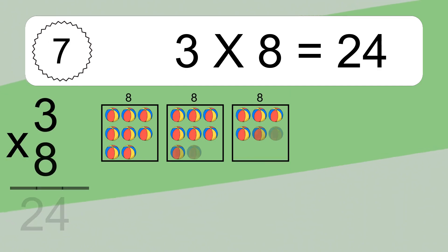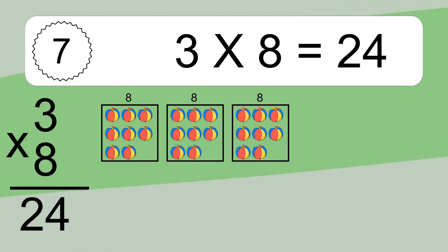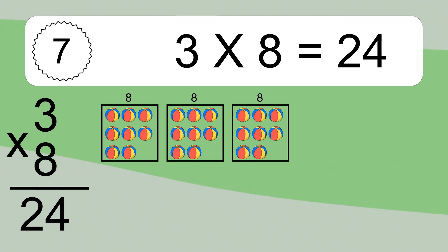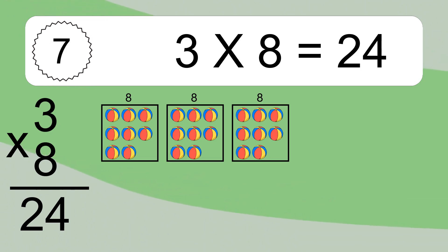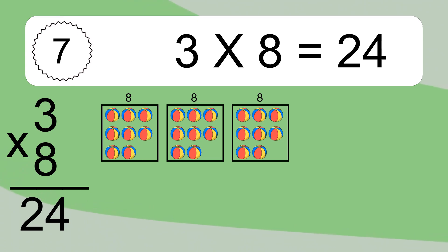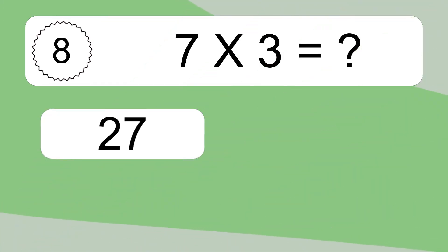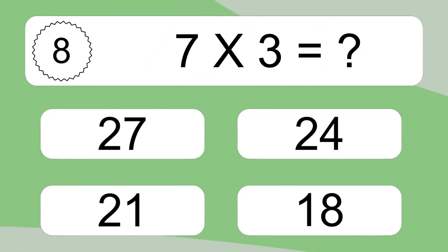3 times 8 equals what? 3 times 8 equals 24. We have 3 boxes and each box has 8 colorful balls inside. If you count all the balls in all the boxes together, you will have 3 times 8 balls. This equals 24 balls.